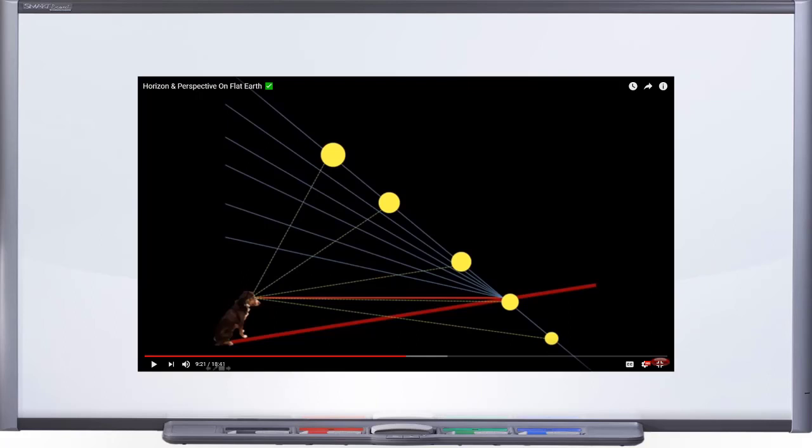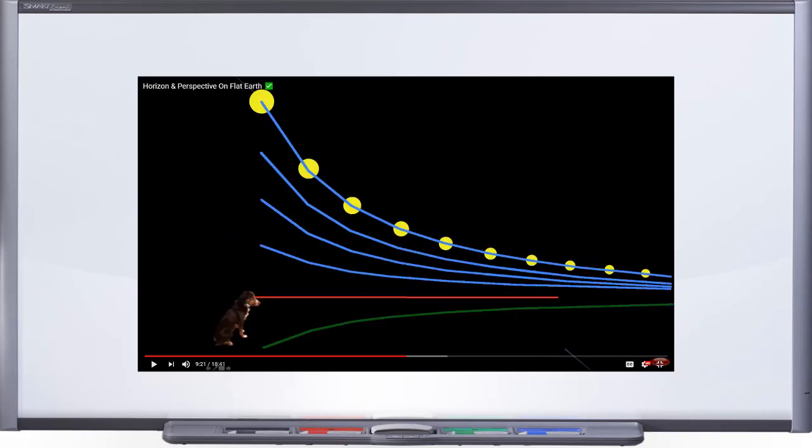They'd like you to believe that this is an accurate portrayal of how an object should look, but that isn't correct at all. If you want to show a graph of the apparent height of an object versus distance, it doesn't look like that. It looks like this. I don't mind if you want to show that diagram, as long as you get it right.